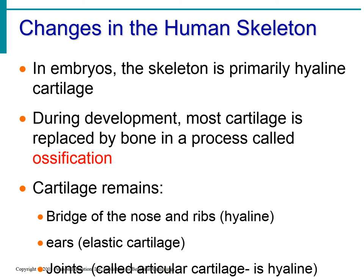After ossification occurs, we still keep cartilage in certain parts of our body. We have cartilage on the bridge of our nose — it's more flexible so it can take a hit. We have cartilage in our ribcage, enabling it to change shape so we can breathe. Both of these are hyaline cartilage. We also have hyaline cartilage in our joints, called articular cartilage — 'arthro' or 'art' means joints, like arthritis — and it keeps bones from scraping against each other. Our ears are made from elastic cartilage, which is more flexible than hyaline cartilage, to amplify sound.